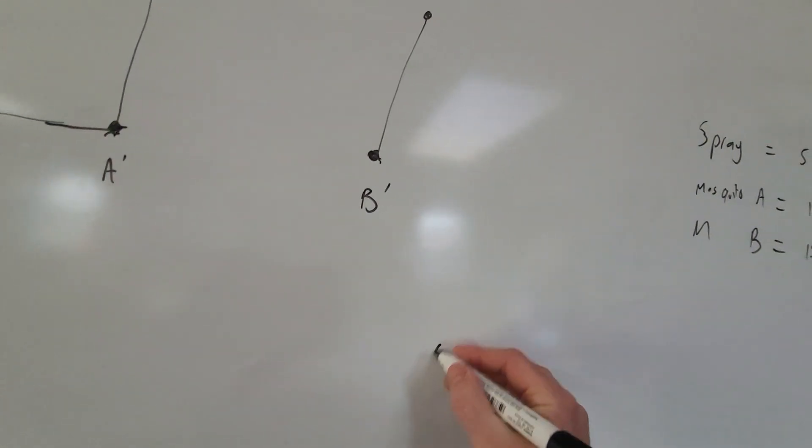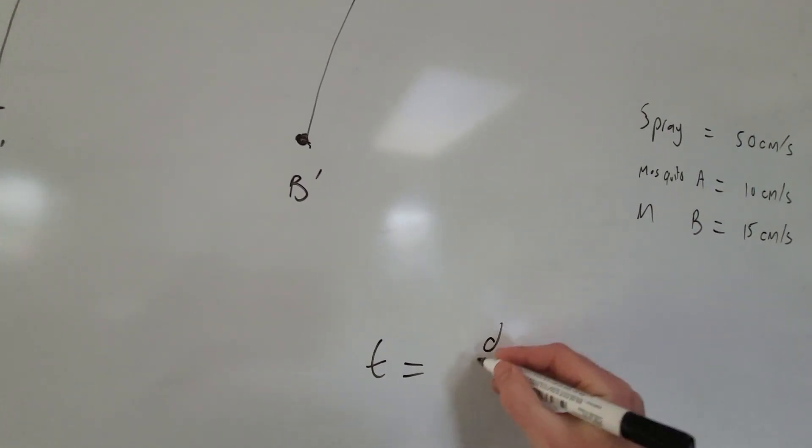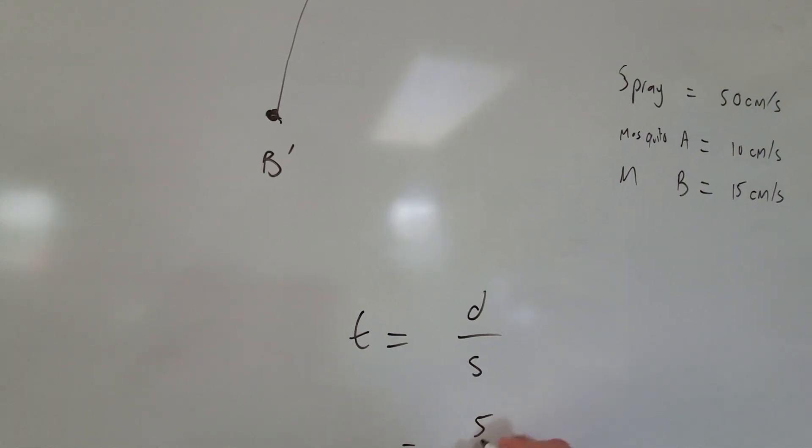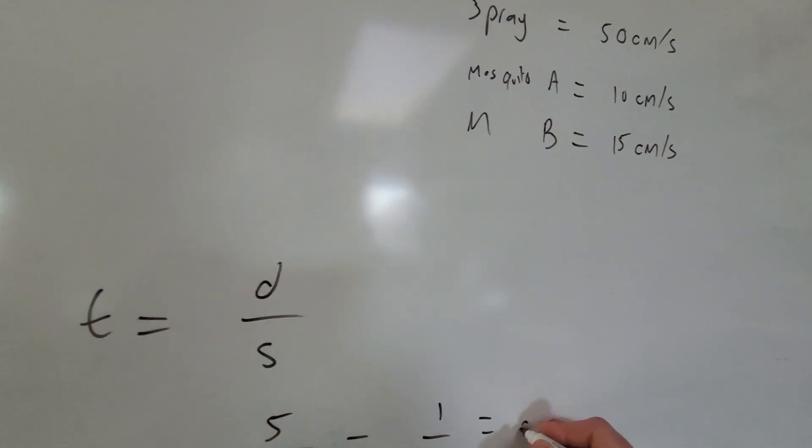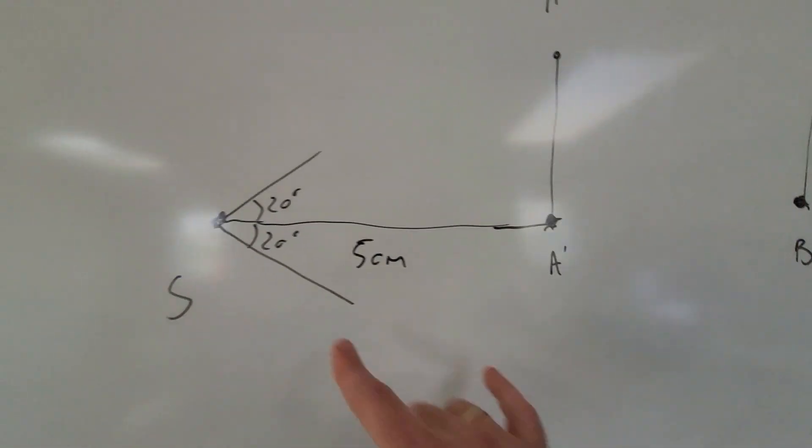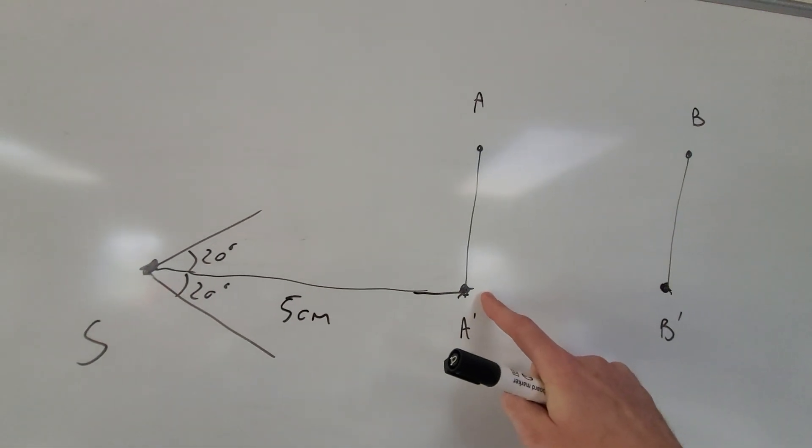So for instance, the time is distance on top of speed. We have 5 centimeters to travel and the spray travels at 50 centimeters a second. We get one tenth of a second. 0.1 seconds for my spray to reach position A prime.